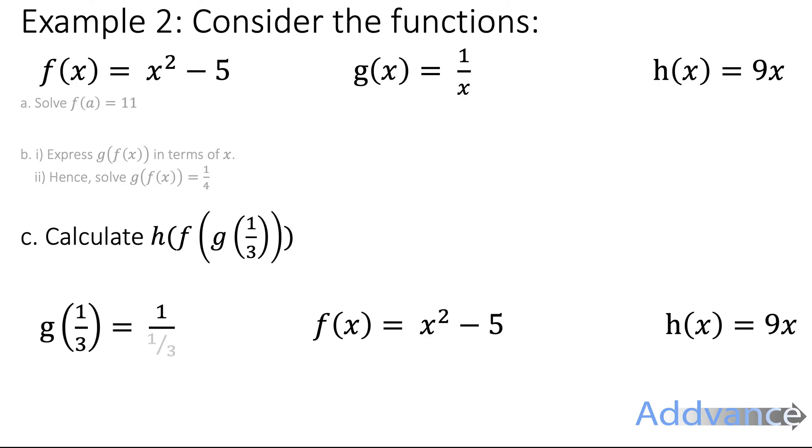So g of one third is 1 over one third. 1 divided by a third is 3. We're going to put this number 3 into f: f of 3, which is 3, which is 3 squared minus 5, which is 9 minus 5, which is 4.